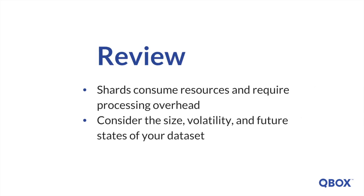Shards consume resources and require processing overhead. To compile results from an index consisting of more than one shard, Elasticsearch must query each shard individually — though simultaneously — and then perform operations on the aggregated results. Because of this, a machine with more IO headroom and a multicore processor can definitely benefit from sharding. While there's no one-size-fits-all shard allocation, we hope that you've benefited from this video. If you want to learn more, you can visit the Qbox blog, where we have an extensive library of Elasticsearch materials and learning tutorials. Thanks for watching.